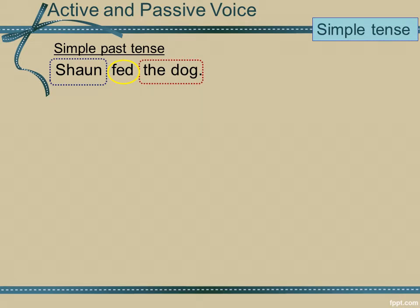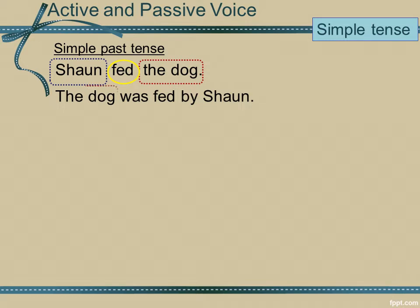If I want to convert the sentence to the passive voice, I need only switch the subject and object. The dog was fed by Sean. Here, the dog stands at the beginning while Sean is at the end.